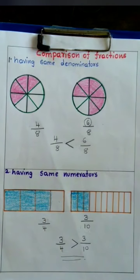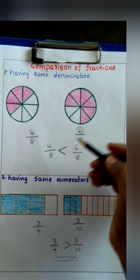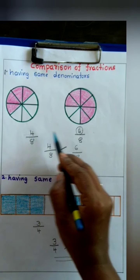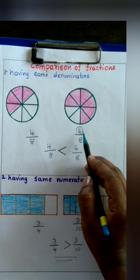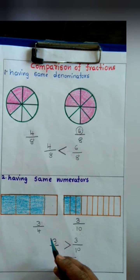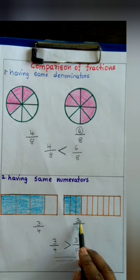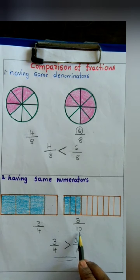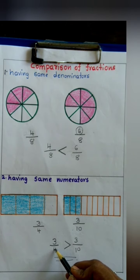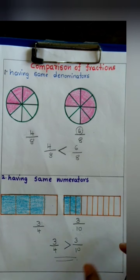Dear children, let us compare both examples. In the first example, denominators are the same but numerators differ — so the fraction with the greater numerator is greater. In the second example, numerators are the same but denominators differ — so the fraction with the smaller denominator is greater and the fraction with the greater denominator is smaller. Just opposite or reverse.